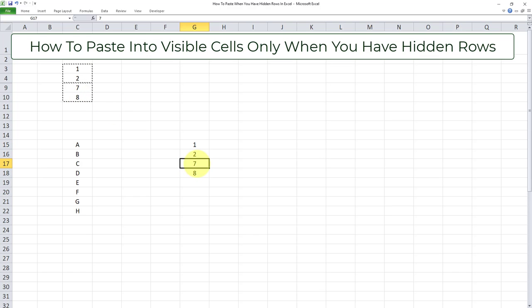Now what if we want to copy data from a different range, say from the A through H range, into the range which contains hidden rows, and we want only the visible cells to be affected by that.